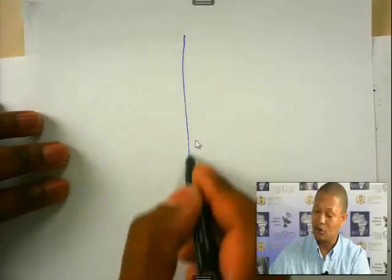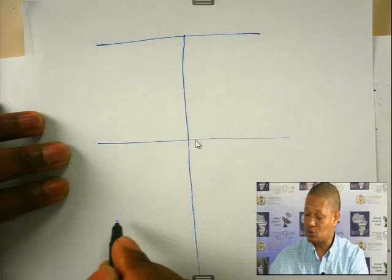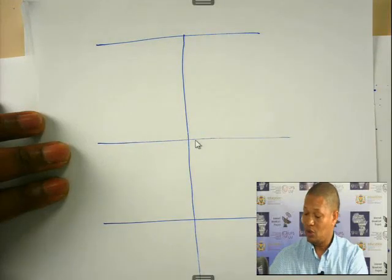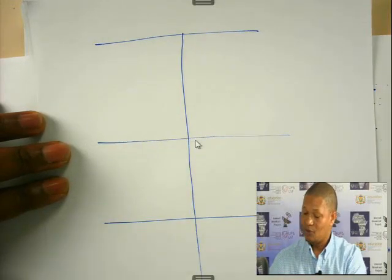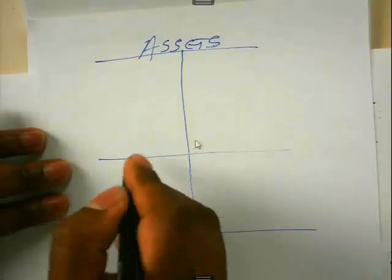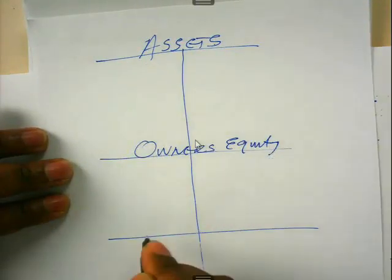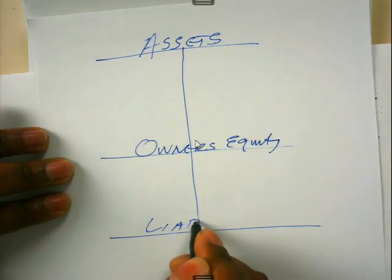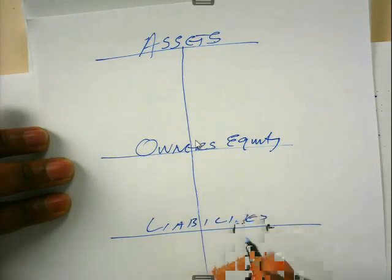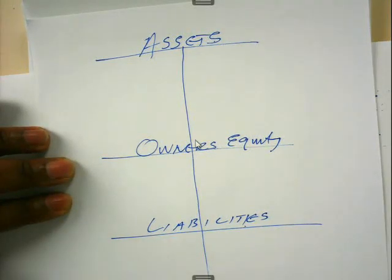In accounting we group accounts according to their types. Firstly we have asset accounts. Then we have owner's equity accounts. We have liabilities. These are the three main groups. Of course we also have income accounts and expenses.